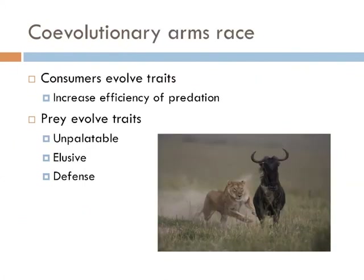Predators have a tendency to evolve traits that make them stronger, faster, and more fierce. And as these more efficient predators evolve, their prey were selected for as well. Slower, weaker prey tended to be consumed in greater numbers, and natural selection favored prey that were either unpalatable, more elusive, or had defensive capabilities.